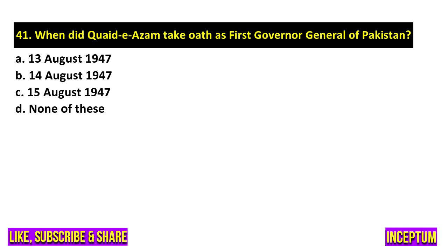Question number 41. When did Quaid-e-Azam take oath as the first Governor General of Pakistan? In the options we have 13th August 1947, 14th August 1947, 15th August 1947, none of the above. And the right answer of this question is option C, 15th August 1947.